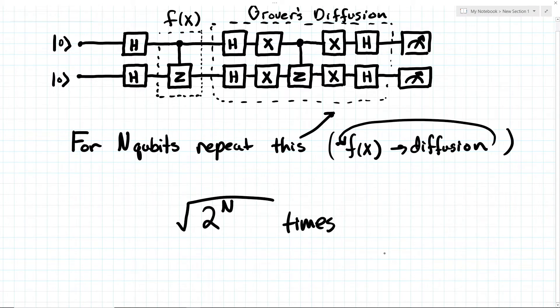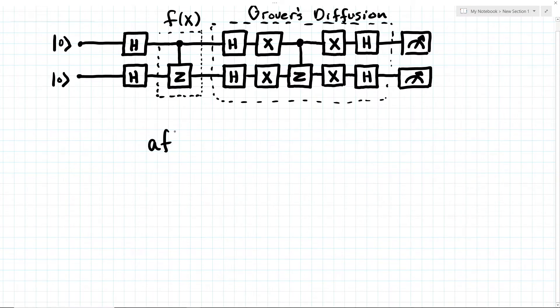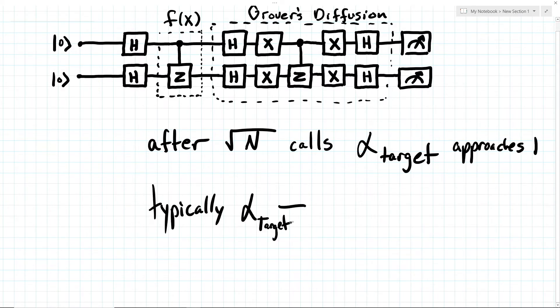The amplification can never get us exactly to 100% chance, except in the case of two qubits. So we always have some small chance of measuring the wrong number. This is the case even in an ideal quantum computer with no noise, which we are quite far from.